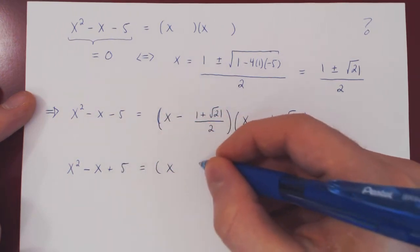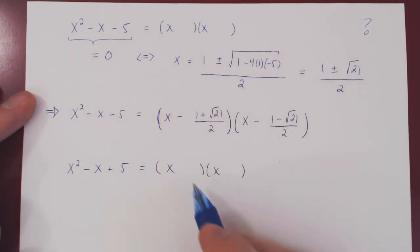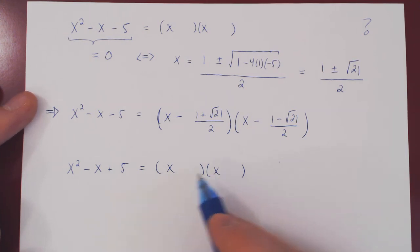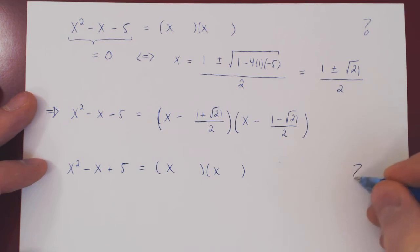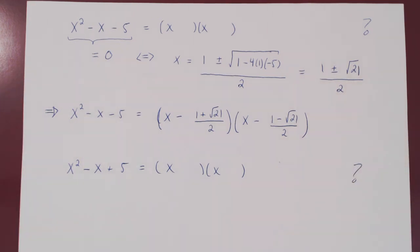If we try by inspection, once again there will be two factors. Now again, we're looking for two real numbers whose product is 5 and whose sum is negative 1. And again, the odds are if you try to find those two real numbers by inspection, you won't find them. So, we fall back on the quadratic equation.